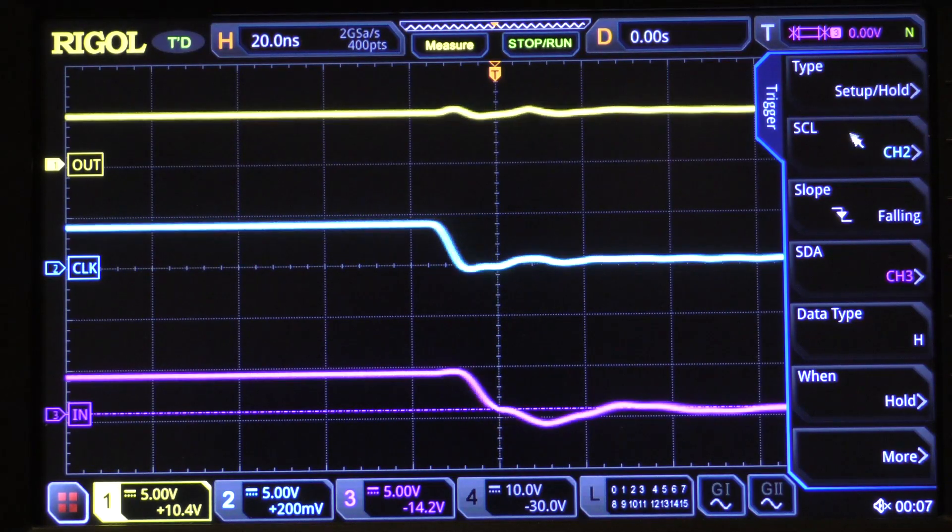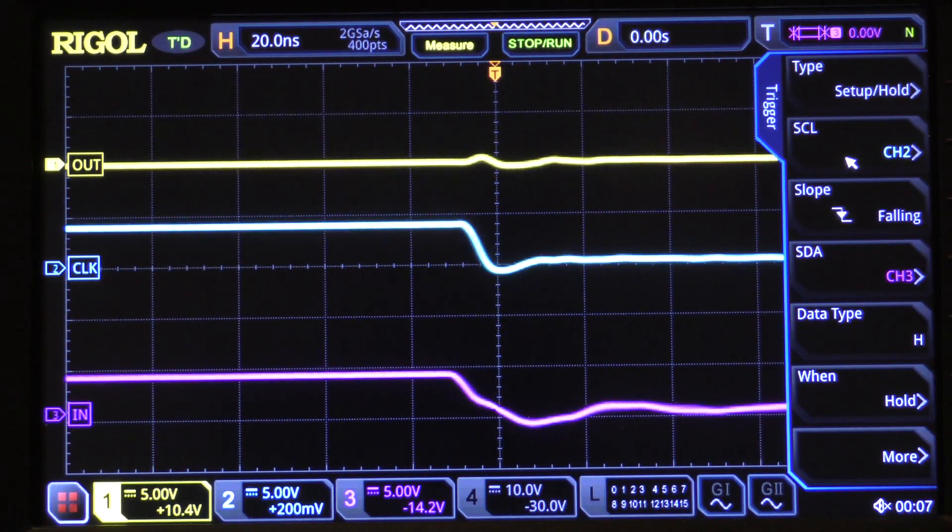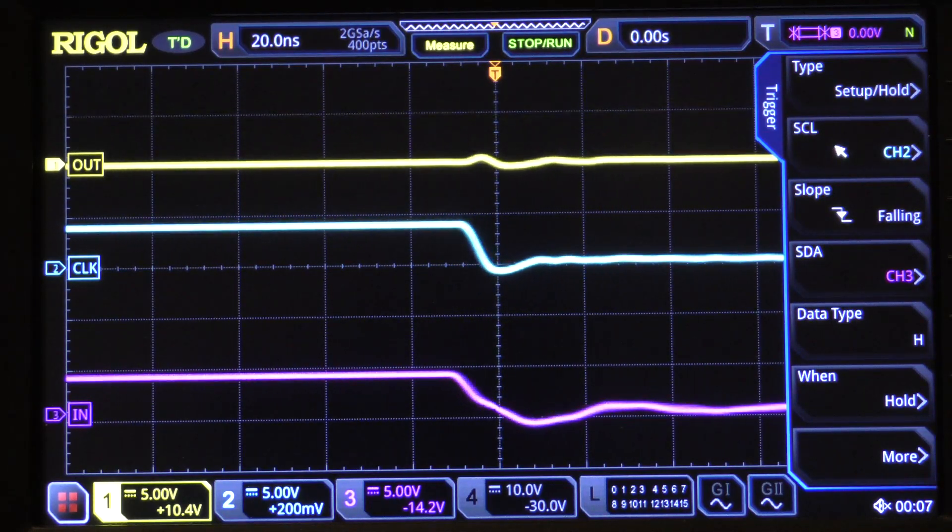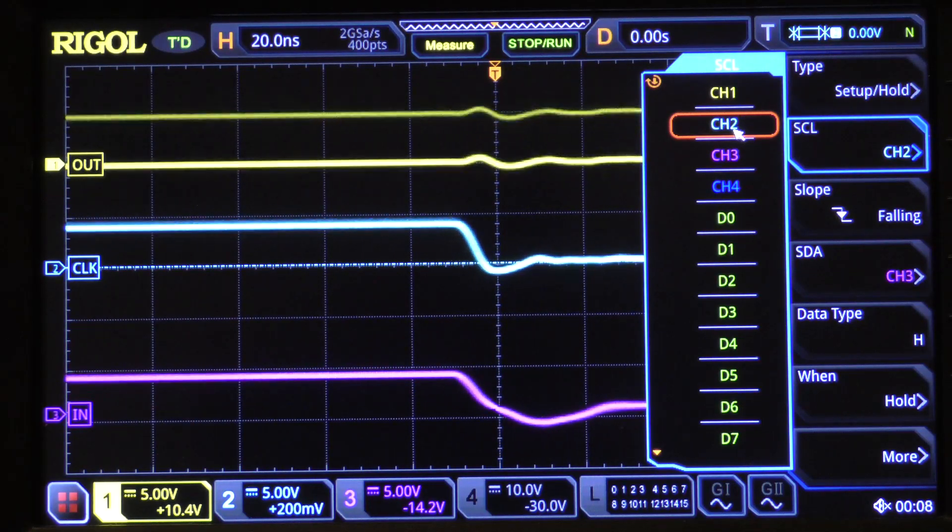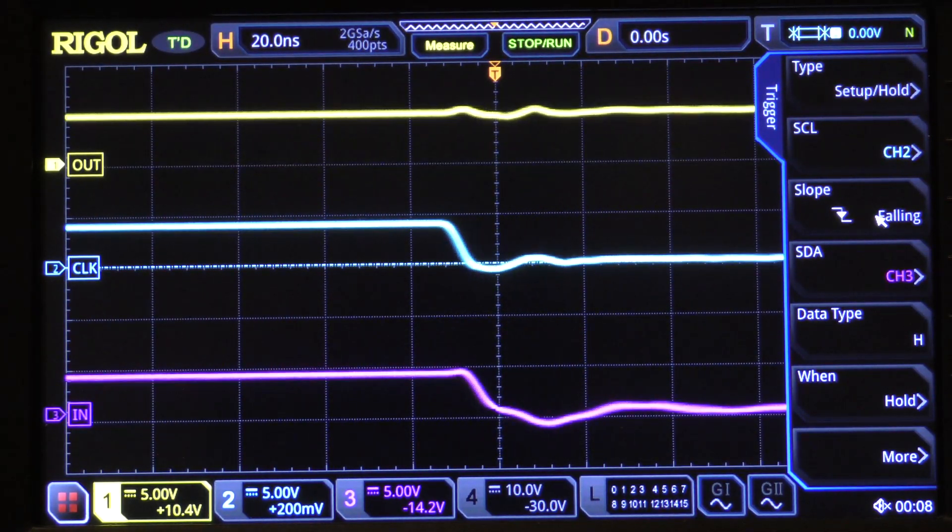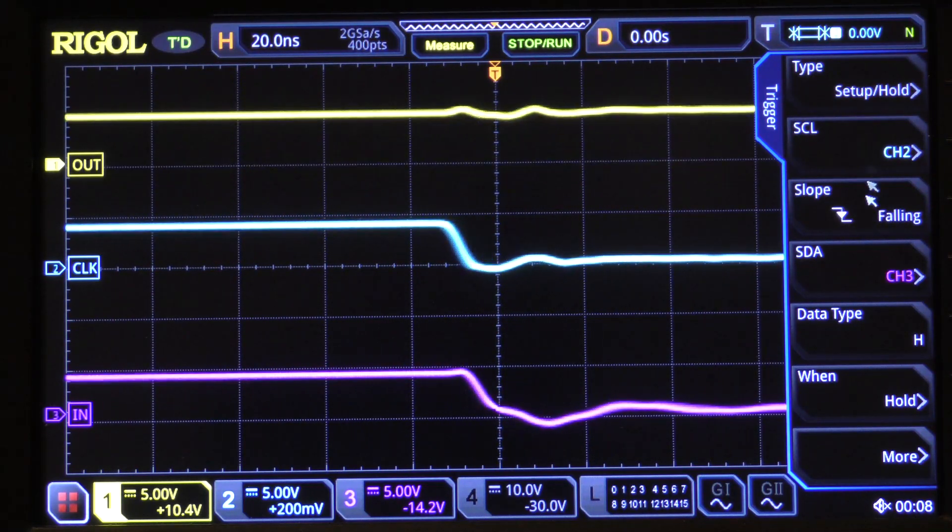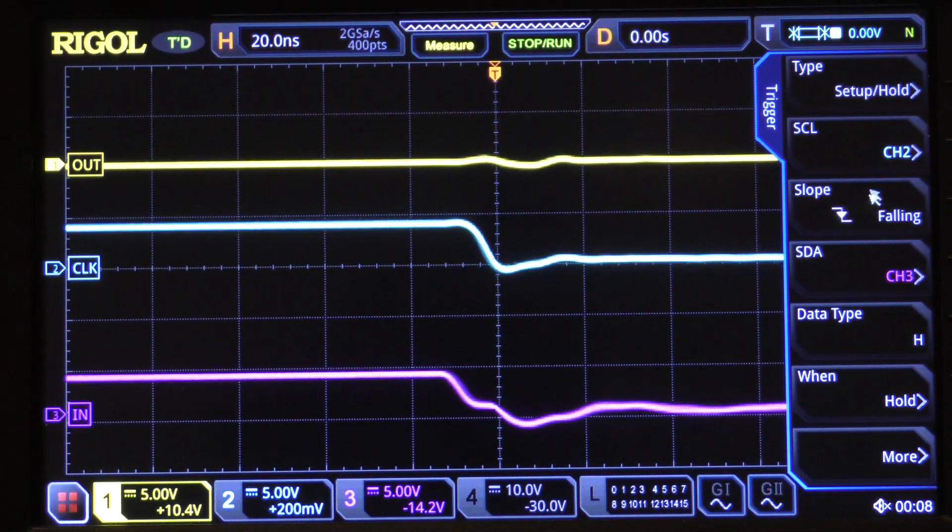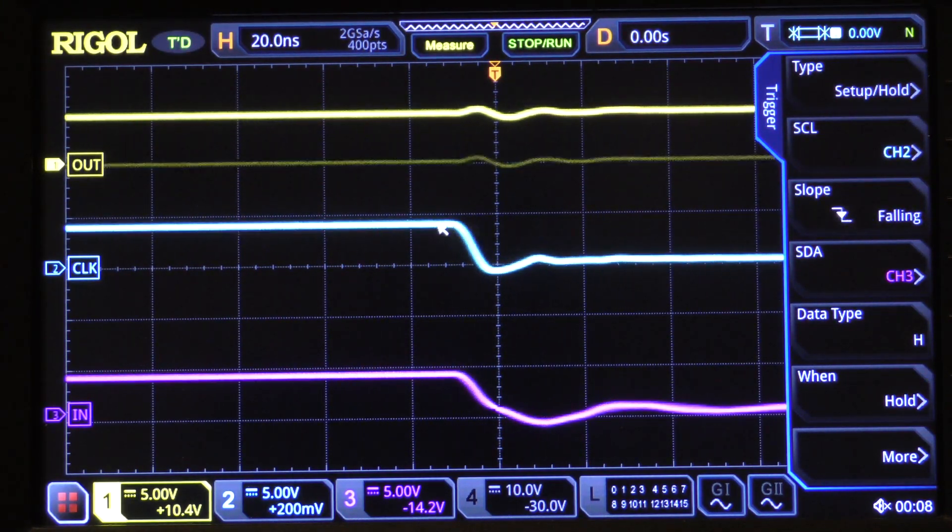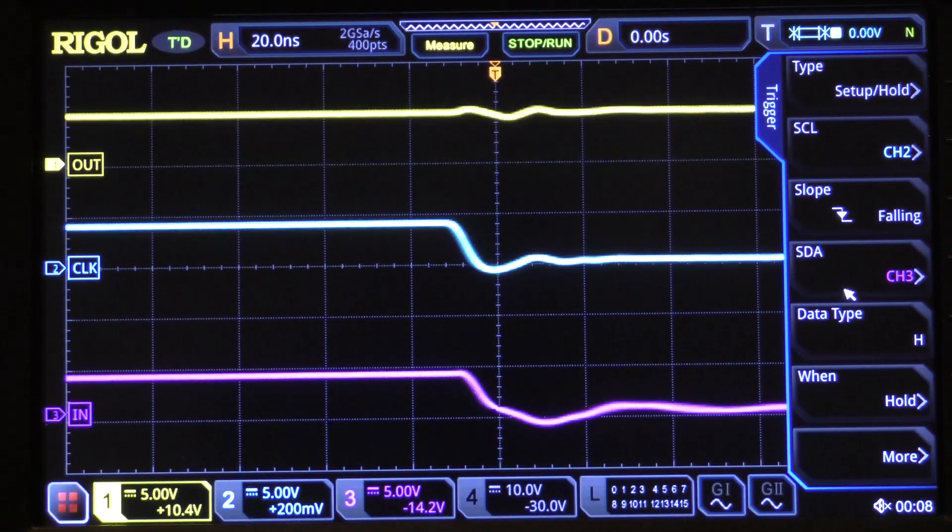Then we have to set up the clock. We have to tell the oscilloscope which channel to use for the clock signal, and of course we have said that's channel 2. We then have to tell the oscilloscope which edge the clock triggers on. It can be rising. Notice that the oscilloscope stops triggering in that case because this is a falling edge clock. So we click on falling.